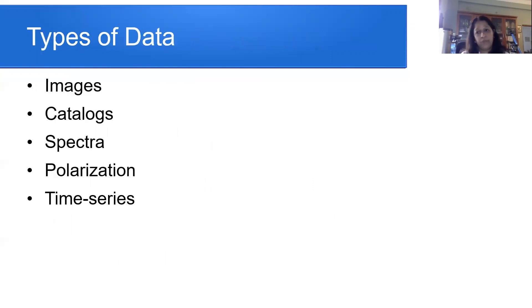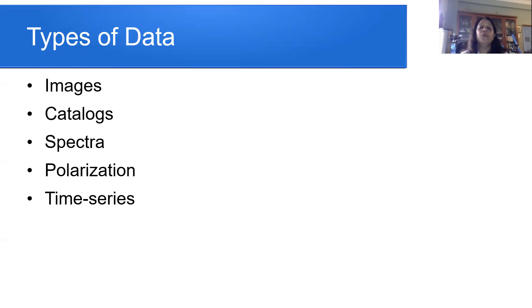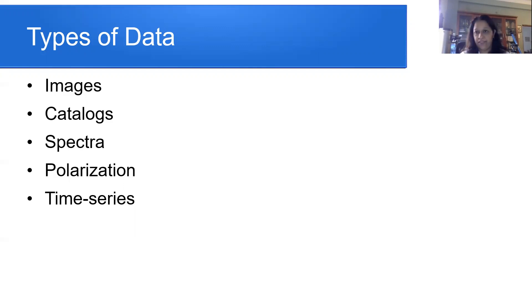What kind of data are we talking about? The data could be just images. From images, you can create catalogues — you look for objects in your images and make catalogues out of them. You could have individual spectra of objects, polarization data, or what is called time series data. Time series data is, for example, where you have a variable source and you measure the brightness of that source with a certain time cadence or time step, giving you a time series.